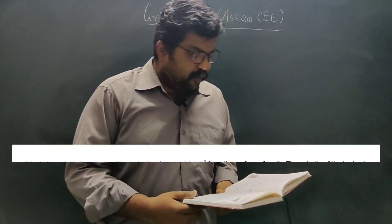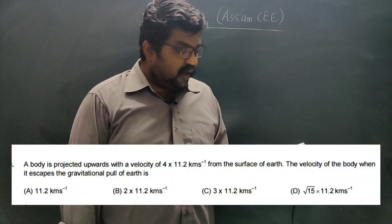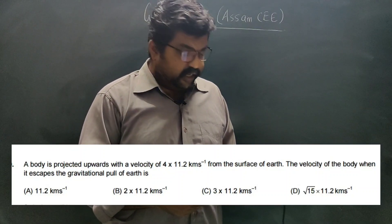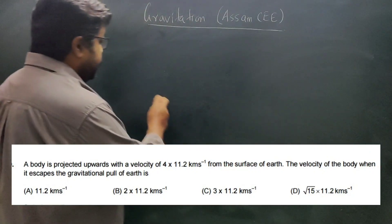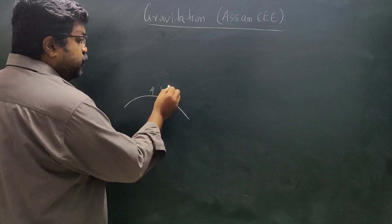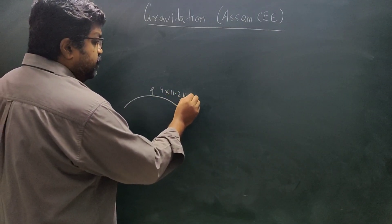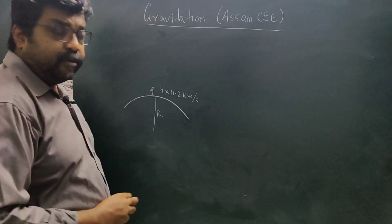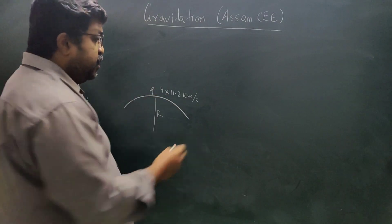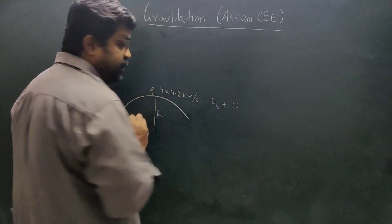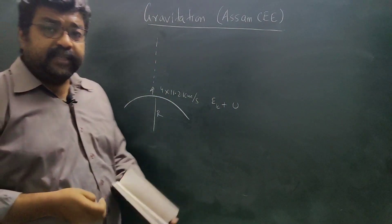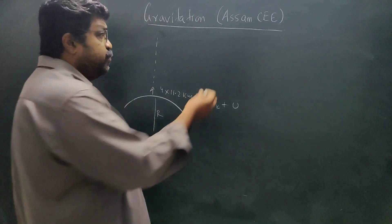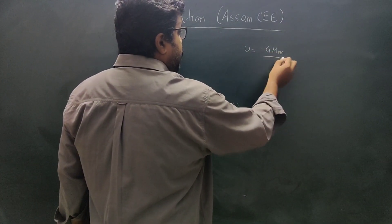In 2018, a body is projected upwards with a velocity of 4 times 11.2 km per second from the surface of the Earth. The question asks: what is the velocity of the body when it escapes the gravitational pull of the Earth? The body starts at the surface with kinetic energy and potential energy. If it escapes from the gravitational pull of the Earth, at infinity the potential energy is zero.